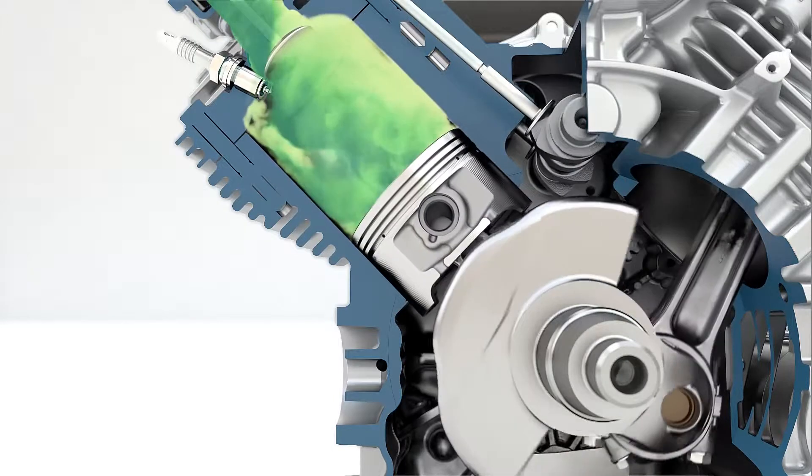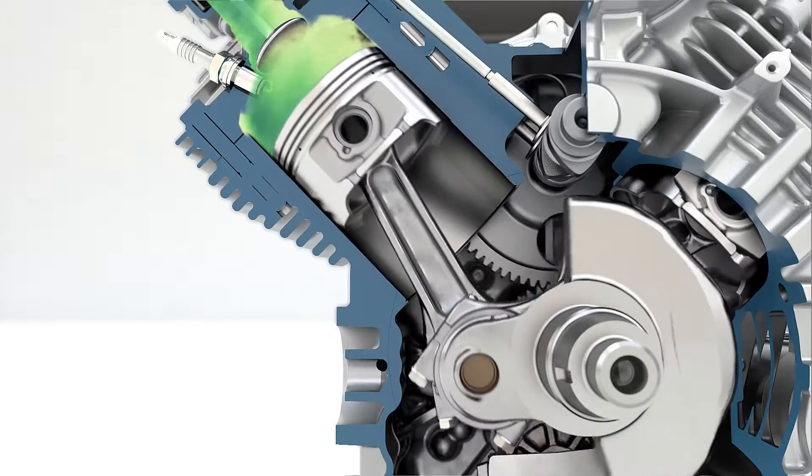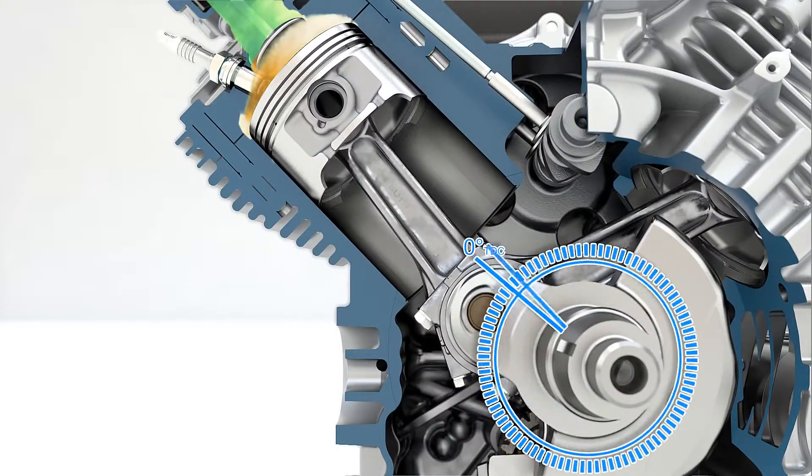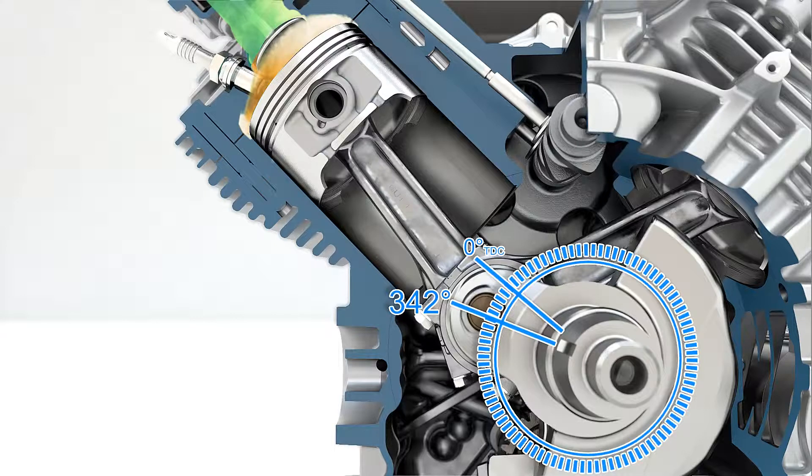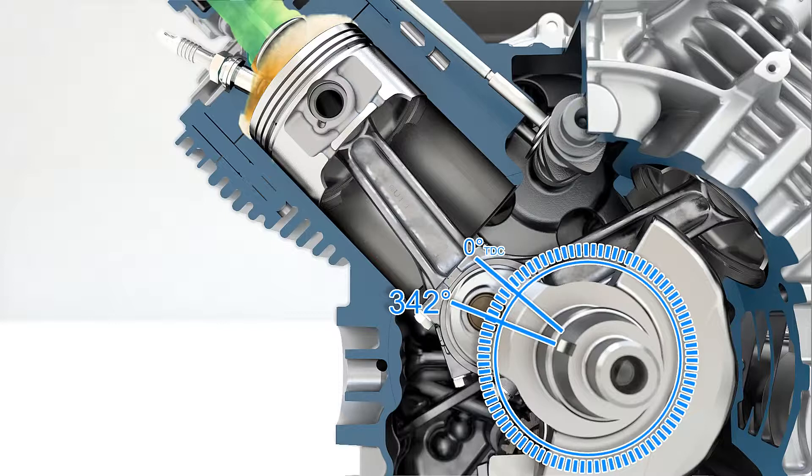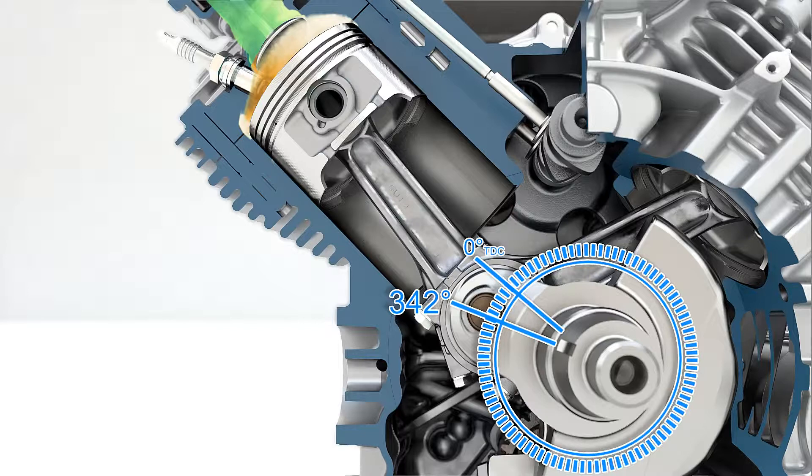Here we can see the fuel air charge being compressed during the compression stroke. Once the crankshaft reaches a predetermined angle, as pointed out to the ECM by the crankshaft position sensor, the ECM closes the ground to the ignition coil, completing a circuit. Up to 15,000 volts now travel at the speed of light to the spark plug and jump across the air gap to start the fire in the combustion chamber.